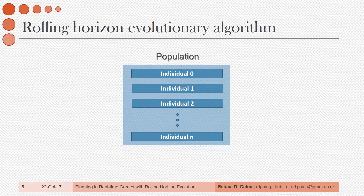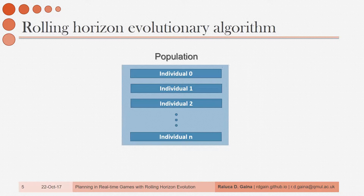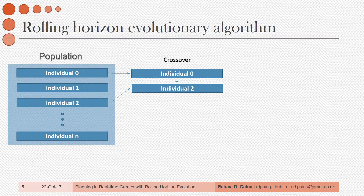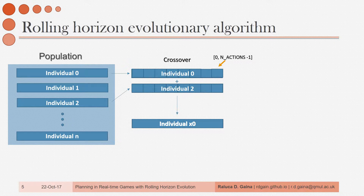A method typically used in this scenario, and the most successful so far, is Monte Carlo Tree Search. But I won't cover that in this talk, instead focusing on a different algorithm which has the potential of being even better. This algorithm starts with a population, randomly initialized in its vanilla version. We then take two individuals for a crossover, where each individual represents a sequence of actions to play in the game starting from the current game tick. Then we perform a uniform crossover of these two individuals to obtain a new one.